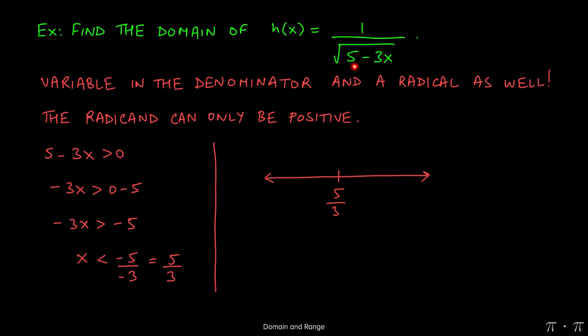If I were to plug 0 into my original function, 1 over the square root of 5 minus 3x, 5 minus 3 times 0 would just be 5. Now I don't know what the square root of 5 is, but I know that it exists. I know that it's some number. So all the numbers to the left of 5 thirds are therefore going to be in the domain, but 5 thirds itself will not be in the domain.